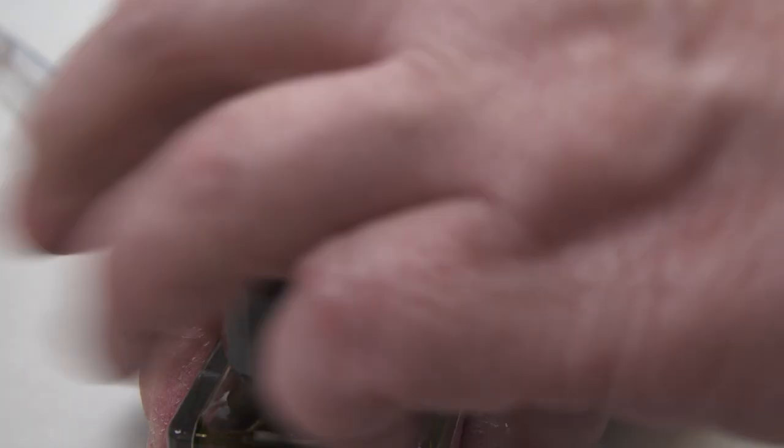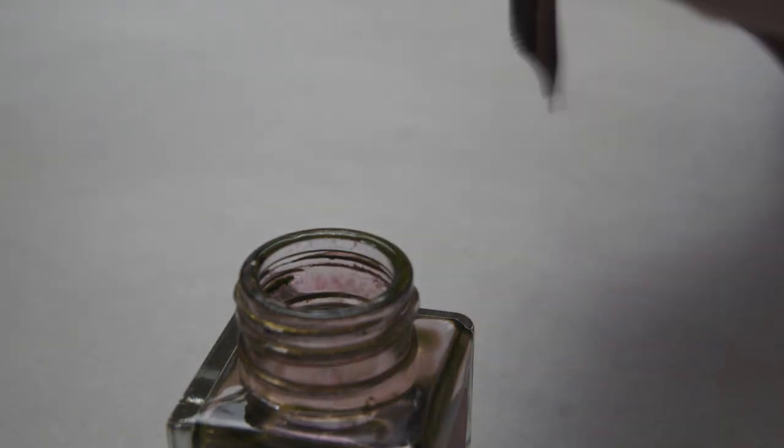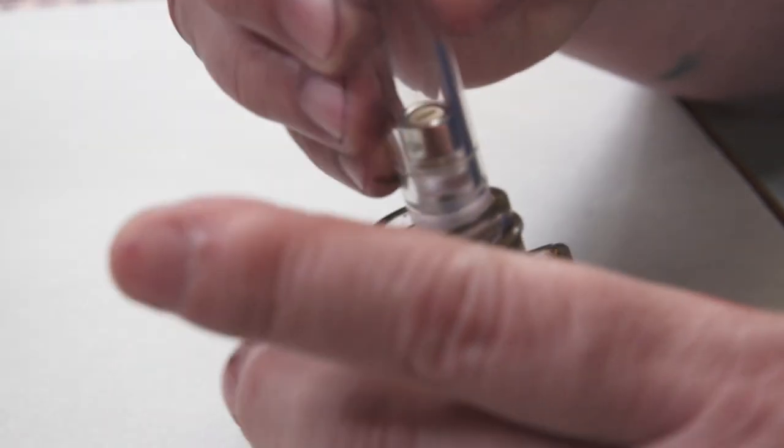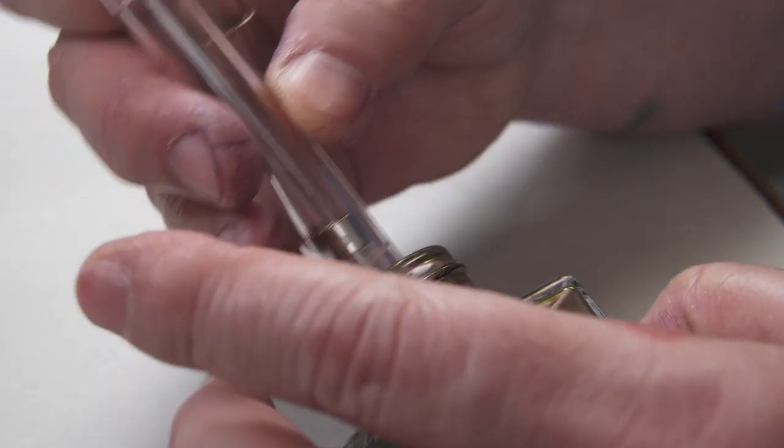And lastly, we're going to try a shimmering ink. This is Tono and Lim's Burma Tourmaline. And I picked another bottle that wasn't all the way full, so I'm going to have to tilt this to fill it up.